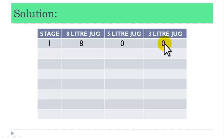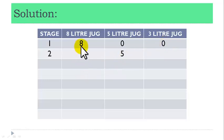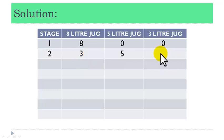Stage 2: fill the 5-liter jug with fluid from the 8-liter jug. Then we are left with 3-liter fluid in the 8-liter jug, while the 3-liter jug still remains empty.